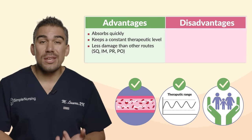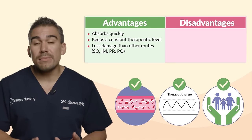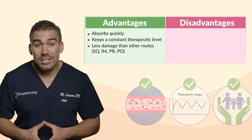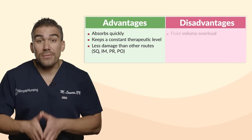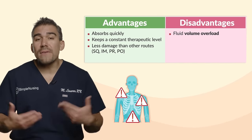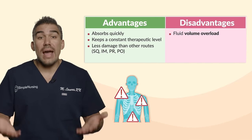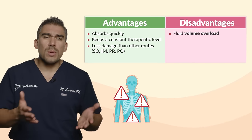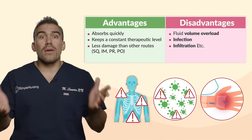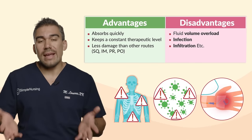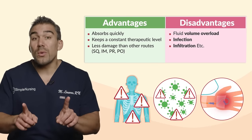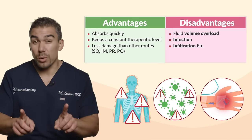For example, sub-Q, IM, PR, or even PO. Now the disadvantages here are fluid volume overload if a fluid is given too fast, as well as infection, infiltration, and all of the other problems with IV administration, which we're going to go into in a short bit.